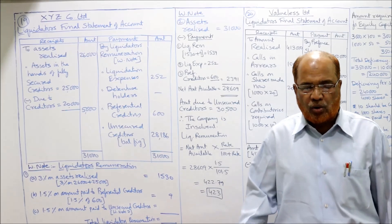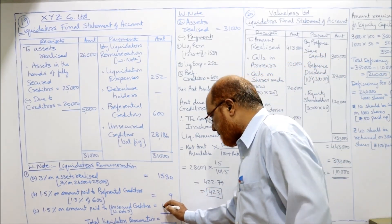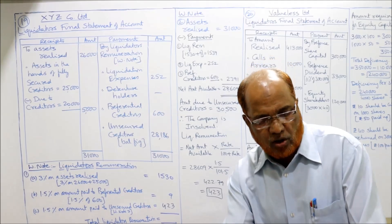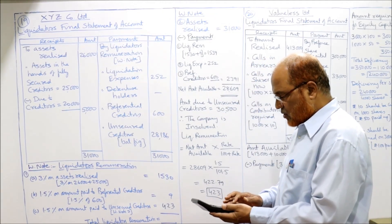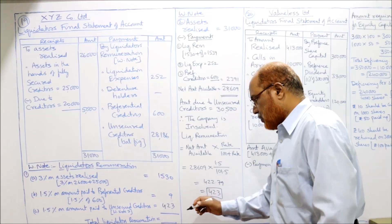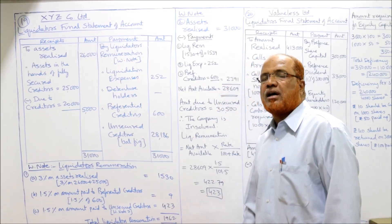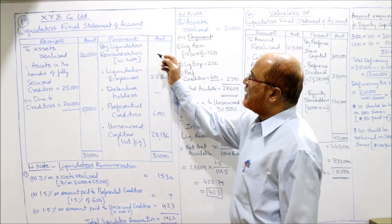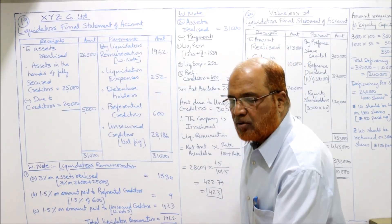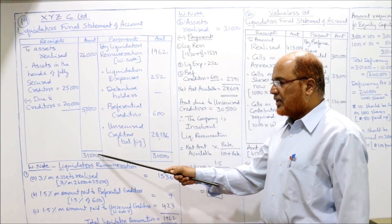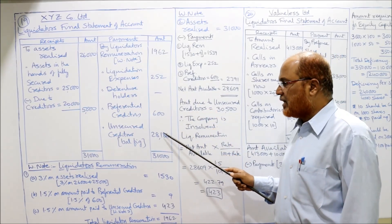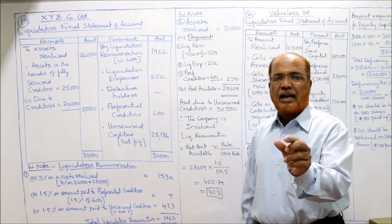Total liquidator's remuneration: 1,530 + 9 + 423 = 1,962. Now with all items known, the balancing figure: 31,000 minus 1,962 minus 252 minus 600 = 28,186. This amount of 28,186 is paid to unsecured creditors. Since unsecured creditors are actually owed 30,500, the remaining is a loss to unsecured creditors. This completes the liquidator's final statement of account for problem 19.